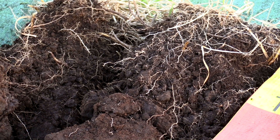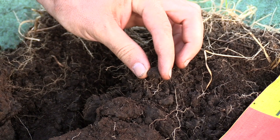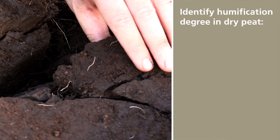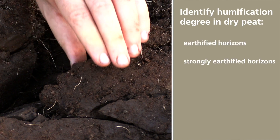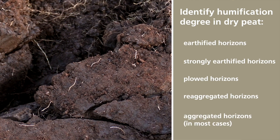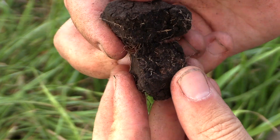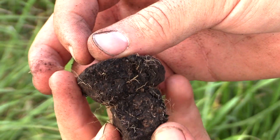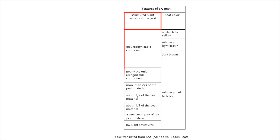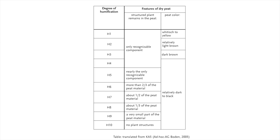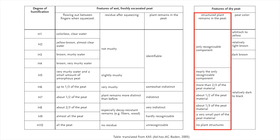Six: peat that has been strongly altered by secondary soil formation is often too dry or too compacted for the von Post squeeze test to work. This is generally the case for peats from earthified, strongly earthified, plowed and re-aggregated horizons, and also for most aggregated horizons. Such material must be evaluated based on the proportion of recognizable plant remains and its color. For this, we have the humification degree table for dry peat. This is how dry samples can also be scored on the von Post scale. The color characteristics in the table are mostly only valid for bog peat, so this criterion is of secondary importance. The given proportions of recognizable plant remains can also be used as a calibration tool when examining wet peat samples after squeezing — this column, which can also be found in the German soil mapping guidelines, is generally very practical.